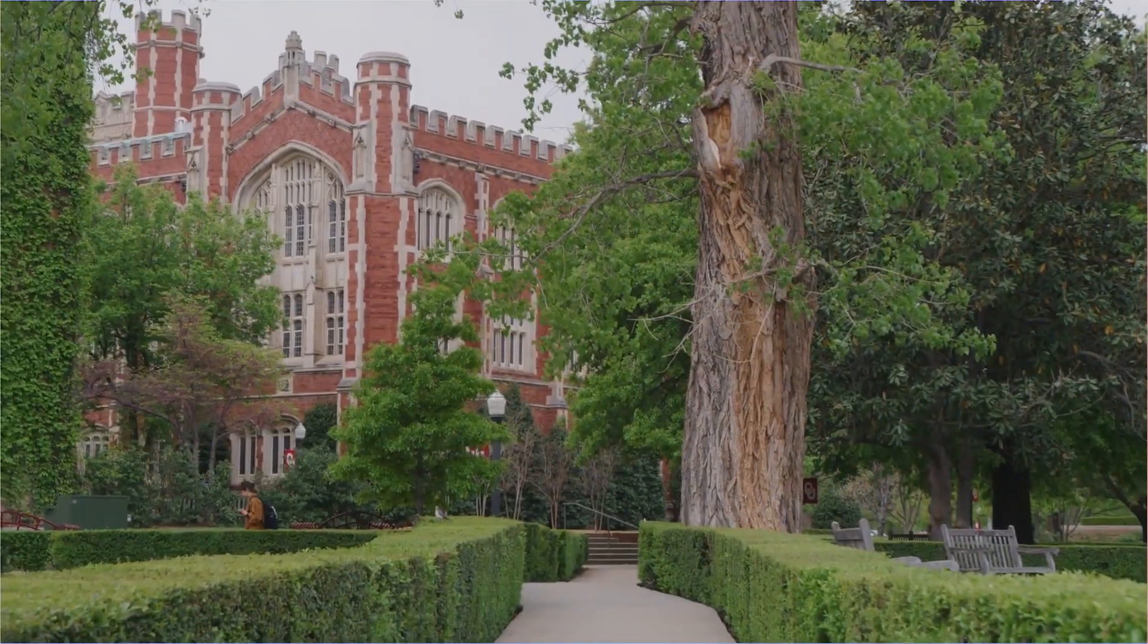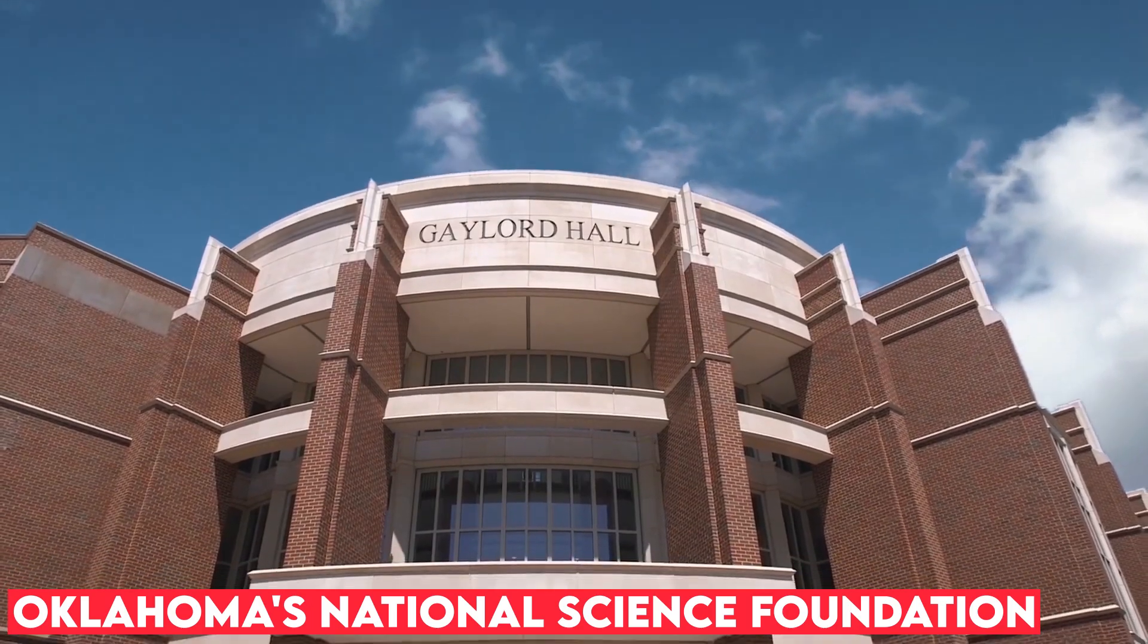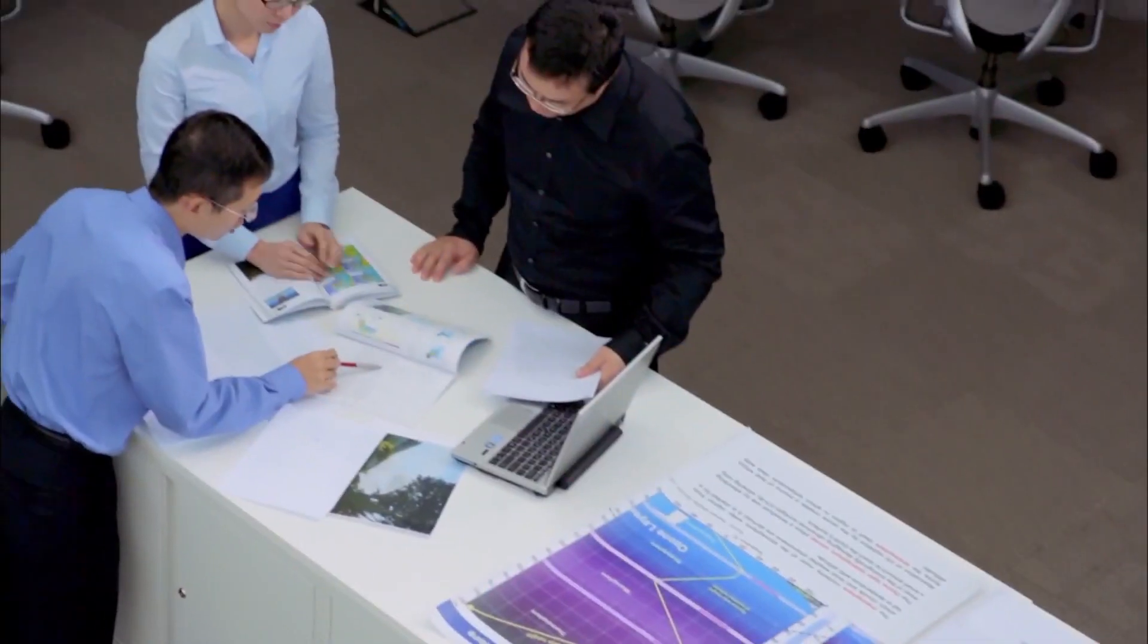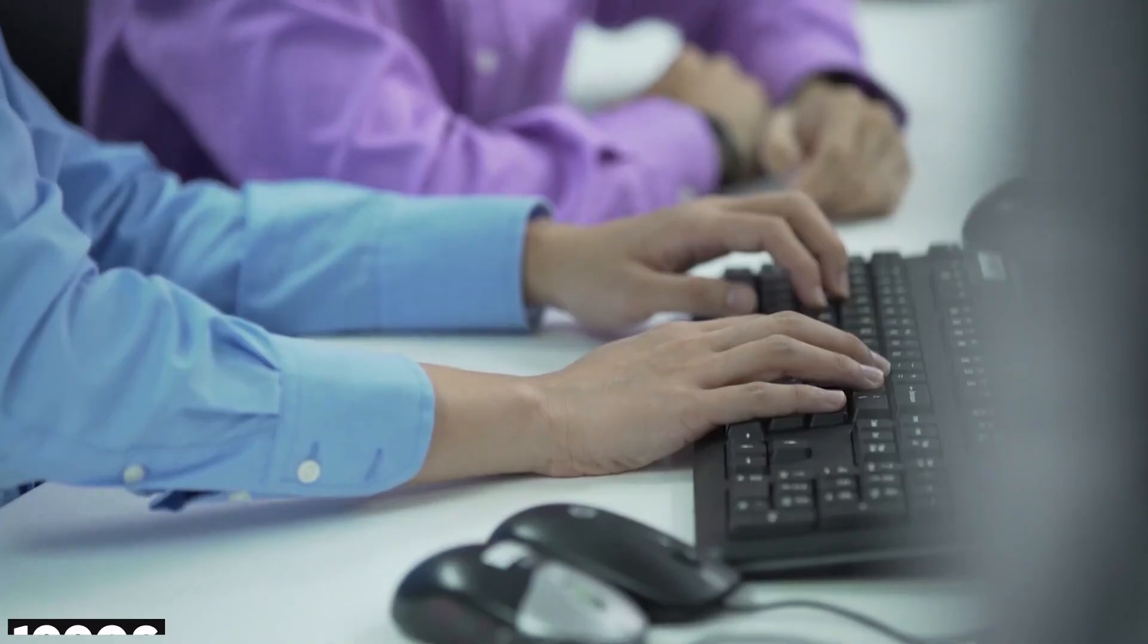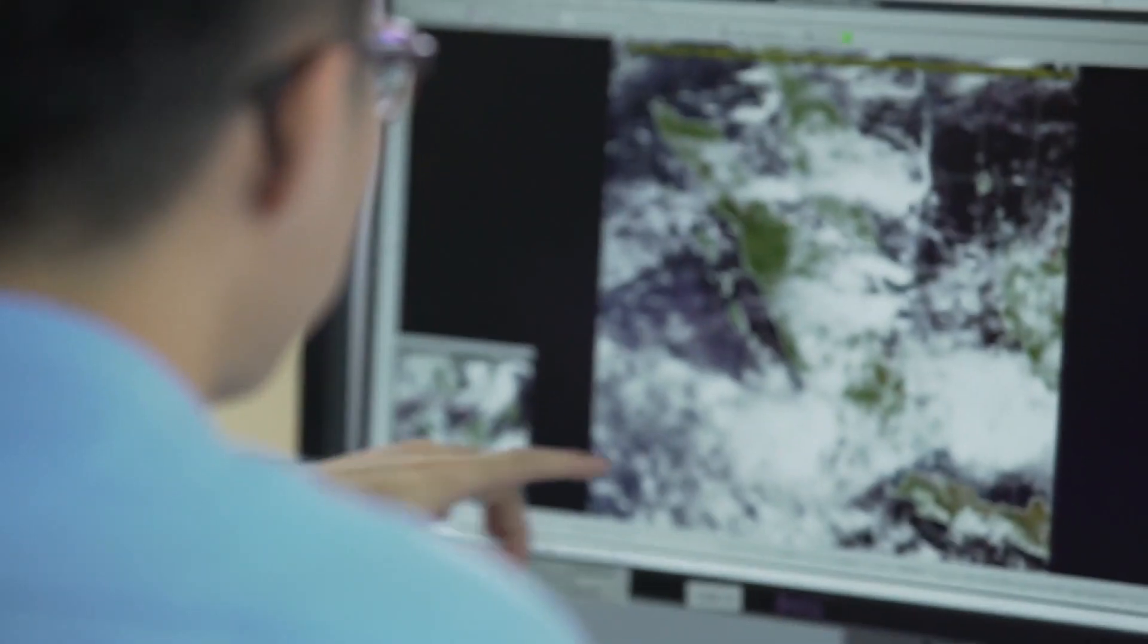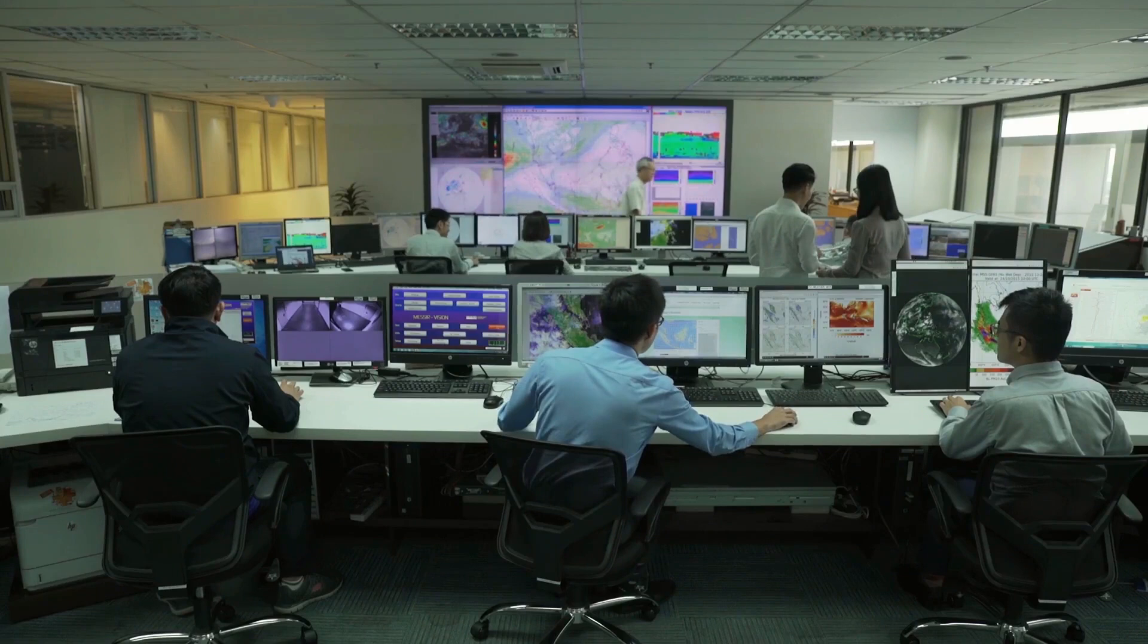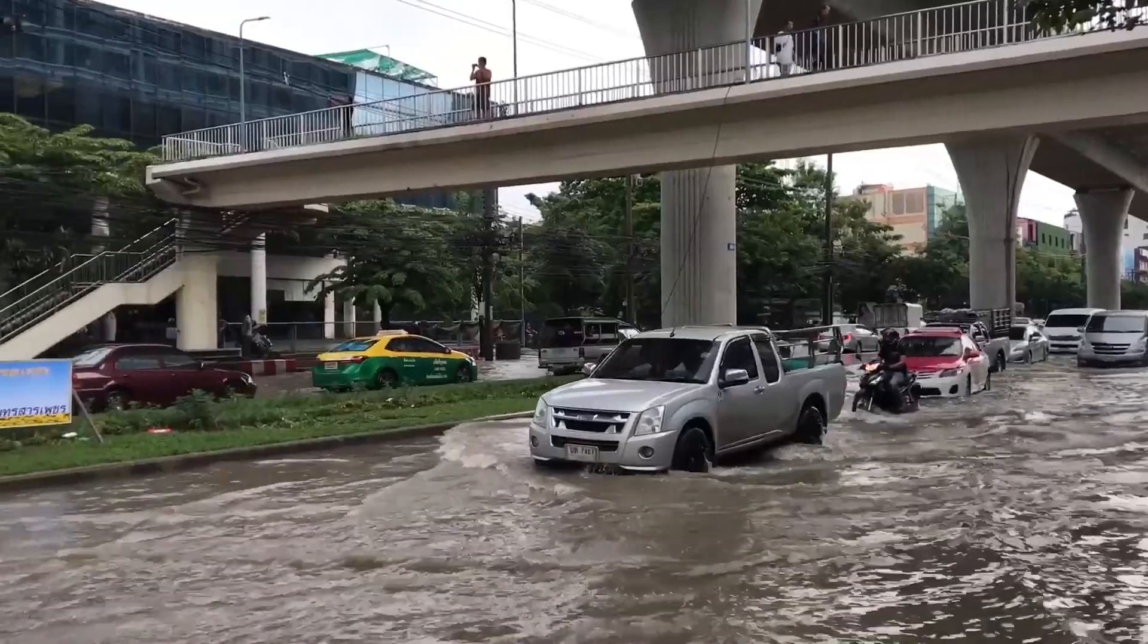Amy McGovern, Ph.D., is the director of the University of Oklahoma's National Science Foundation AI Institute for Research on Trustworthy AI in Weather, Climate, and Coastal Oceanography. McGovern, an American Meteorological Fellow, has been researching extreme weather since the late 1990s. Throughout her work, she has seen a rapid advancement in the field of artificial intelligence, all while creating what she thinks are reliable AI ways to prevent weather and climate calamities.